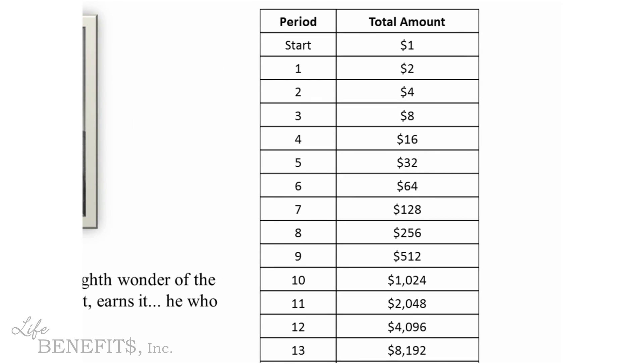What is compound interest? Over here on the right we have an example. Starting out with one dollar, we let it double at 100% compounding interest, and at the end of one period it's now two dollars.